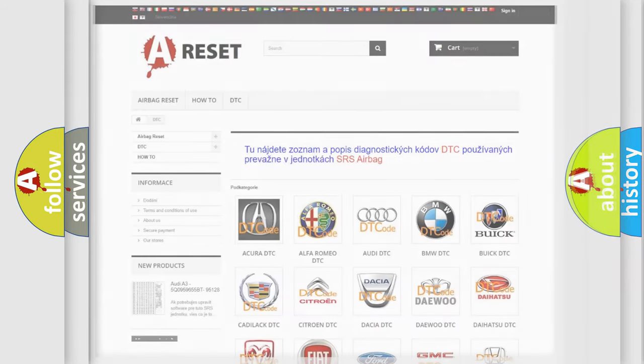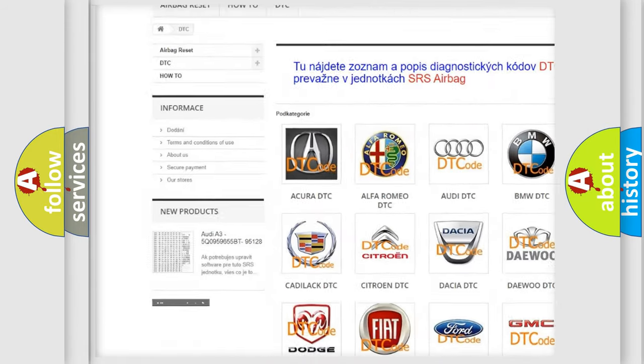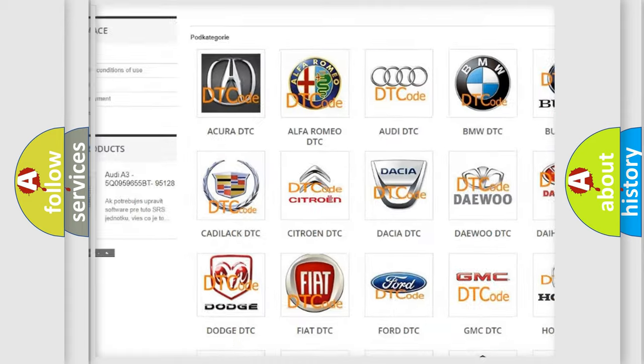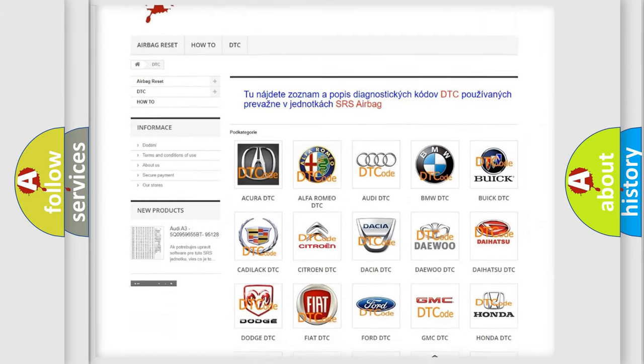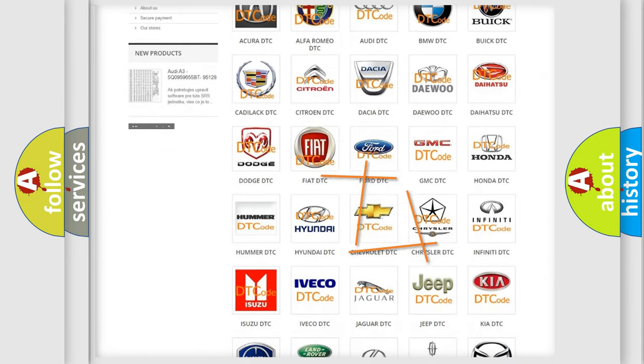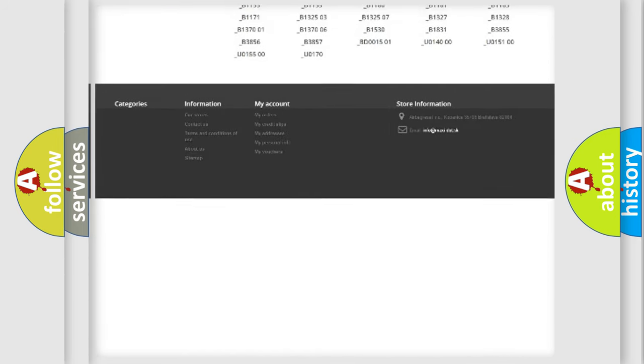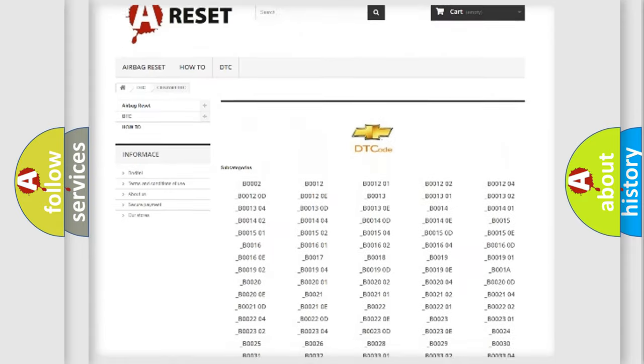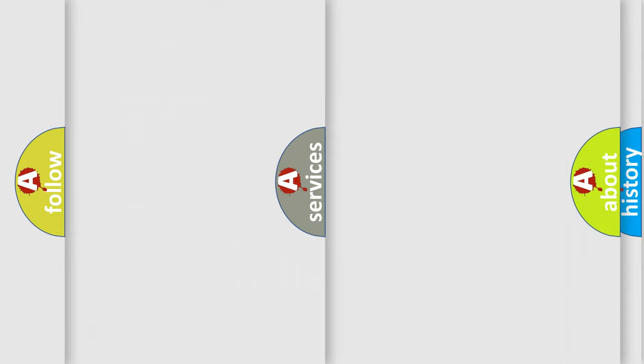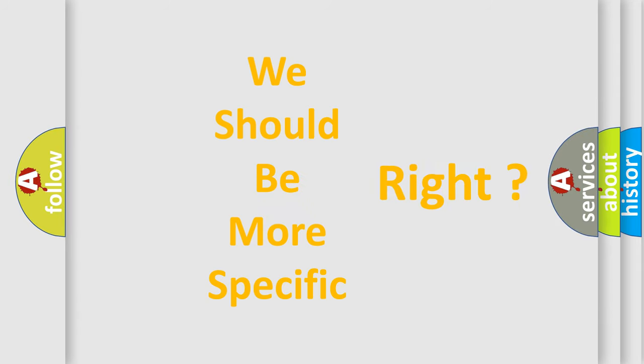Our website airbagreset.sk produces useful videos for you. You do not have to go through the OBD-2 protocol anymore to know how to troubleshoot any car breakdown. You will find all the diagnostic codes that can be diagnosed in Chevrolet vehicles and many other useful things. The following demonstration will help you look into the world of software for car control units.